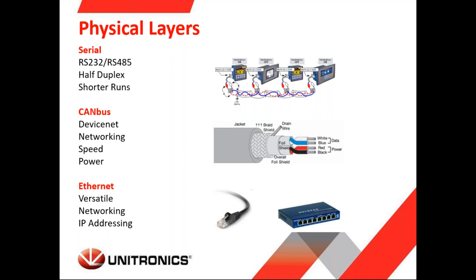The longer the run of the cable, the more potential there is for interference on the line. Serial is not as robust a connection as CAN bus or Ethernet would be, which brings us to our next physical layer, CAN bus.